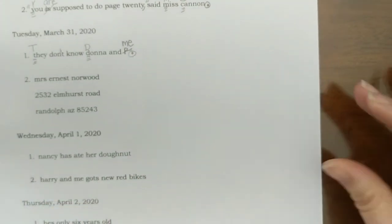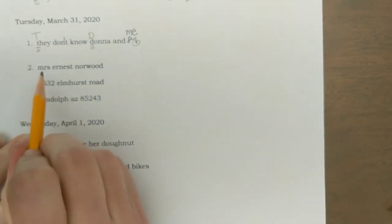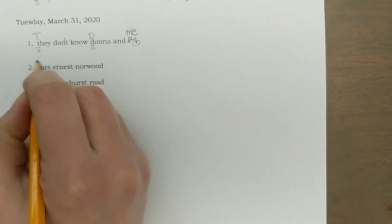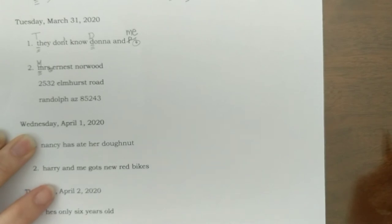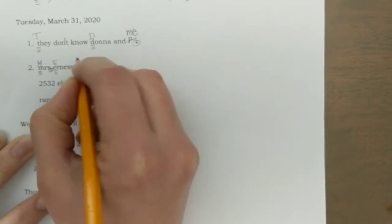And on number two, we have an address. We're going to begin our address. It needs a capital M for Mrs. and a period because it's an abbreviation. Ernest needs a capital E. And Norwood needs a capital N. That is her name.